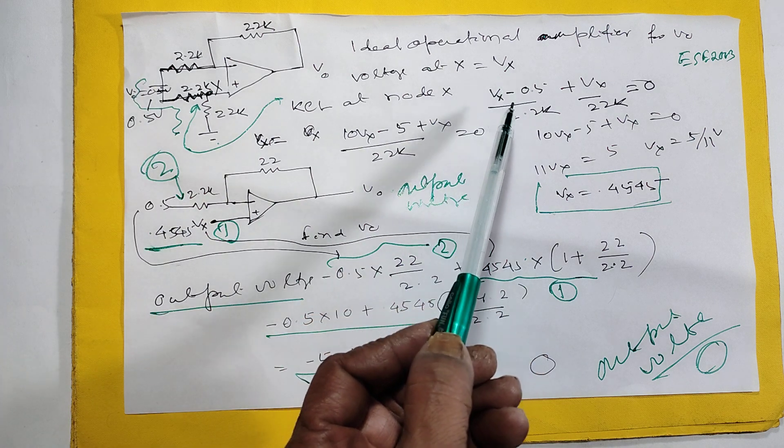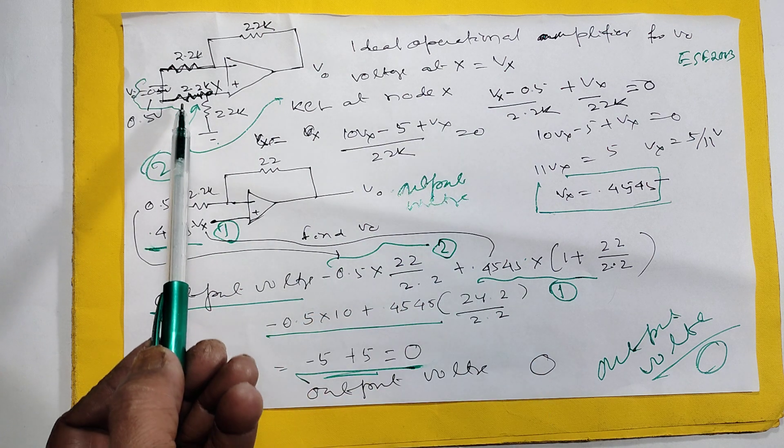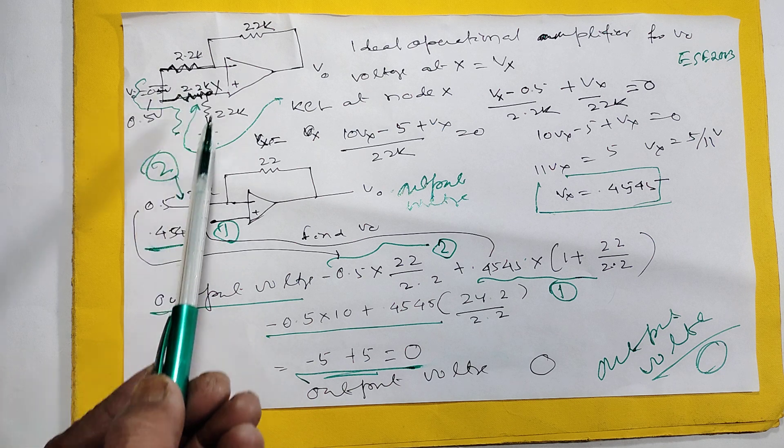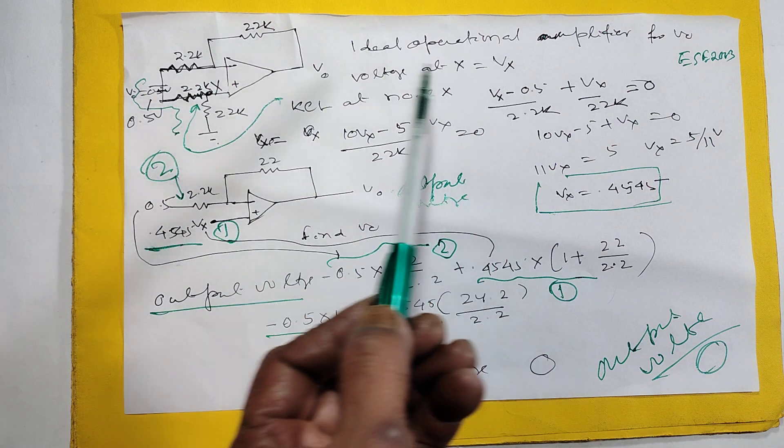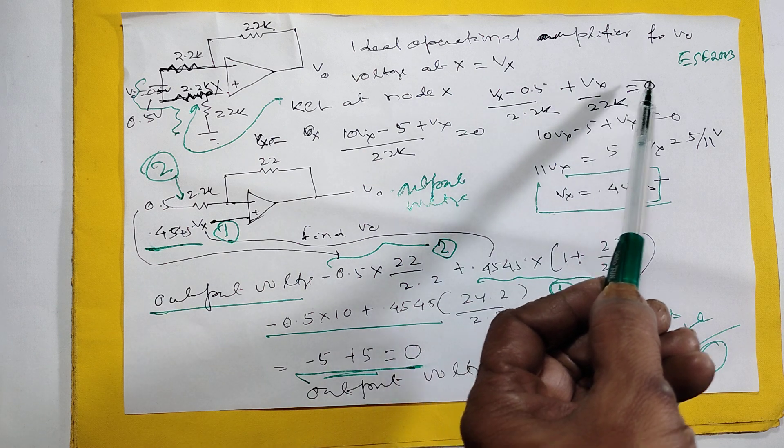Here one is going, so current is equal. Because one branch is equal, current is equal. So again, Vx by 22k is equal to 0.